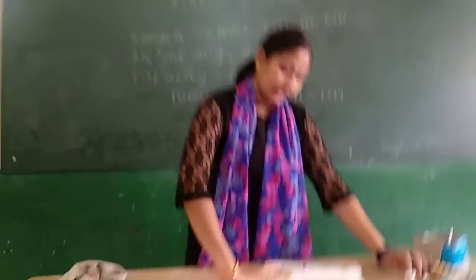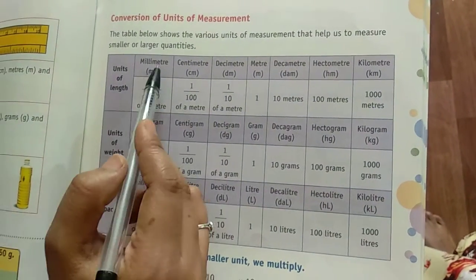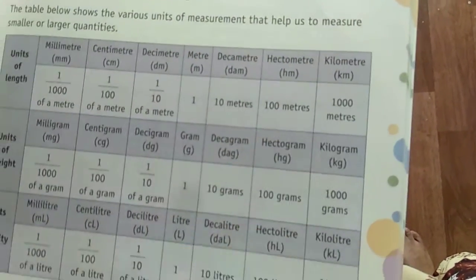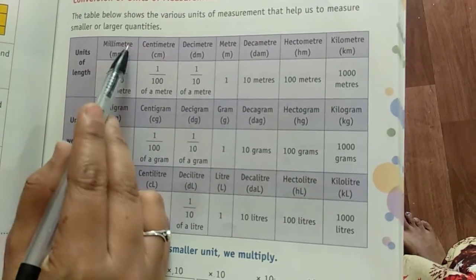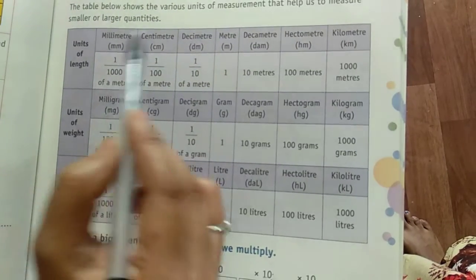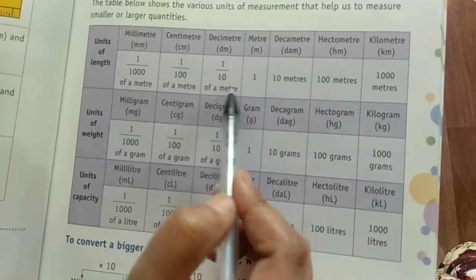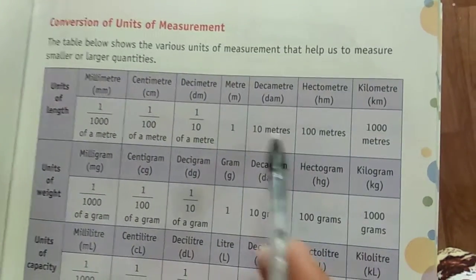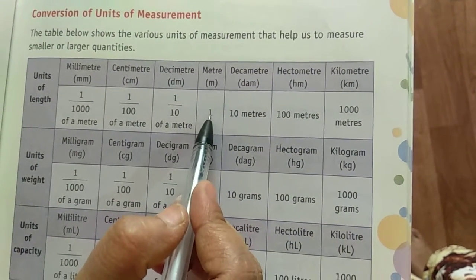Now let us see the conversion of units of measurement from the book table. For length: millimeter, centimeter, decimeter, meter, decameter, hectometer, kilometer. Millimeter is 1 by 1000 of a meter. Centimeter is 1 by 100 of a meter. Decimeter is 1 by 10 of a meter. Meter is 1. Decameter is 10 meters. Hectometer is 100 meters. Kilometer is 1000 meters.